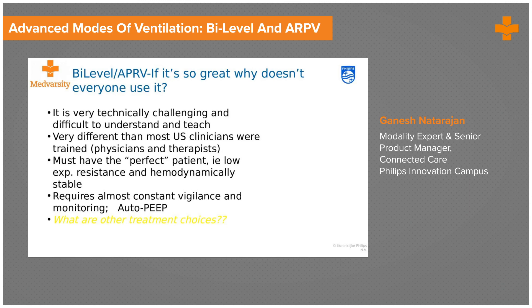APRV is a mode with many clinical papers written about it, but usage in many parts of the world is not very high because it is considered technically challenging to understand and teach. It is used most commonly in places like the US where respiratory therapists are available. There is also a requirement for the ideal patient: low expiratory resistance and hemodynamic stability — which is not always easy to find in the ICU. These modes require constant vigilance and monitoring because they may also promote auto-PEEP.